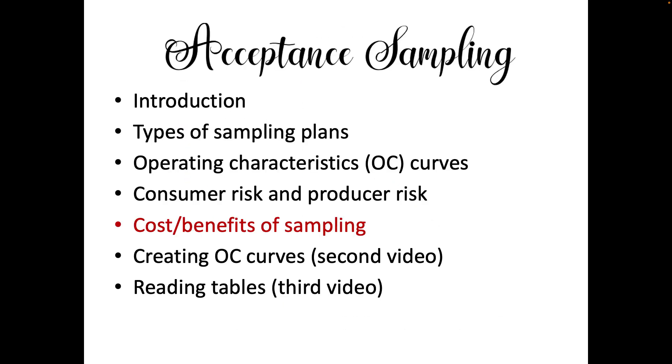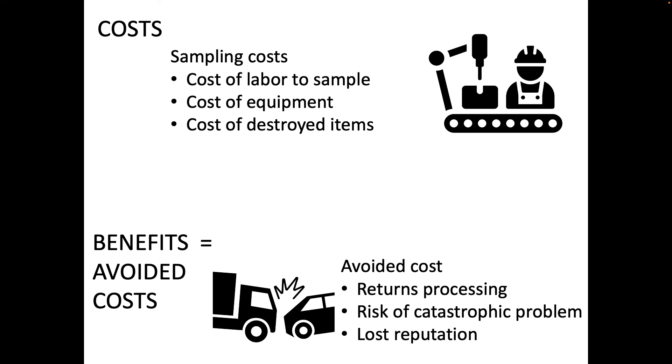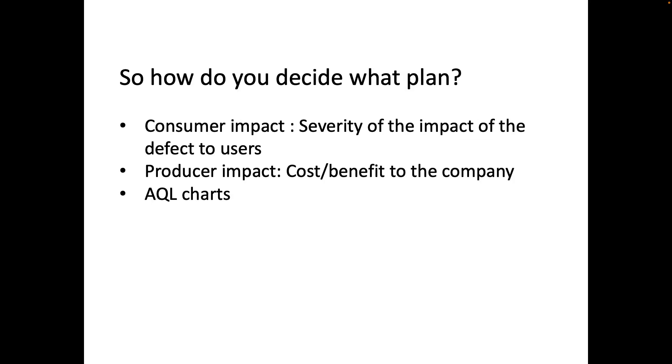The next thing I'm going to look at is well then how do you make these kinds of decisions. One of them is looking at the cost of sampling versus the benefit of avoiding, which is also equal to avoiding costs. So the cost of sampling is the cost of the labor to sample, the cost of the equipment, the costs to destroy the items. But the avoided costs or the benefits are you avoid returns processing, you avoid risk of catastrophic problems associated with a defective item, you avoid the loss of reputation. You can see that those costs or the benefits or the avoided costs are quite hard to estimate, but the cost of sampling is pretty easy to get. So often what we do is just look at the cost and we ask ourselves are the benefits going to be more than this cost or less. It's sort of like a break even kind of question.